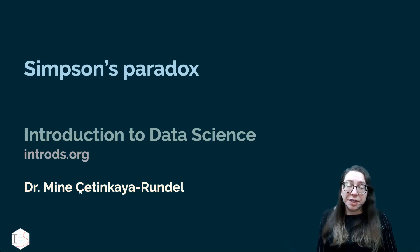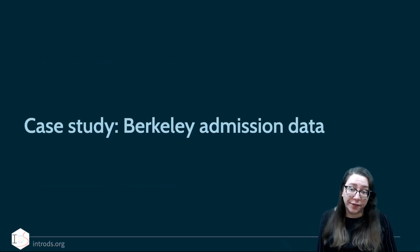Hi, in this video we're going to continue our discussion around relationships between variables, confounding variables, and independence between variables. We're going to define a new concept: Simpson's paradox. Let's do that in the context of a case study.